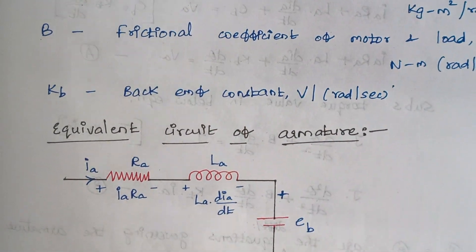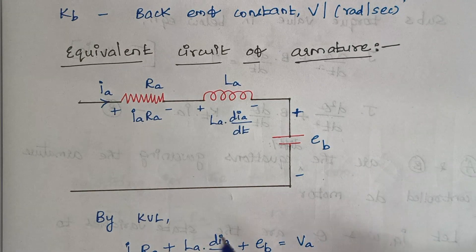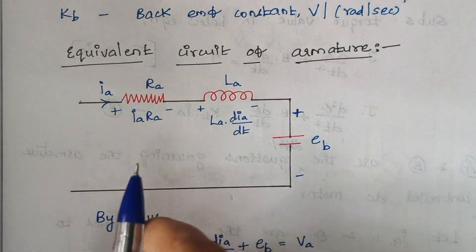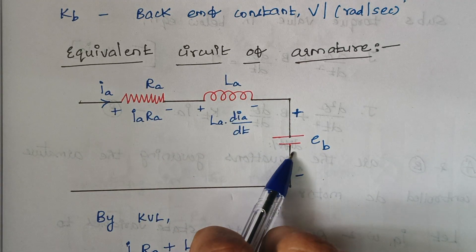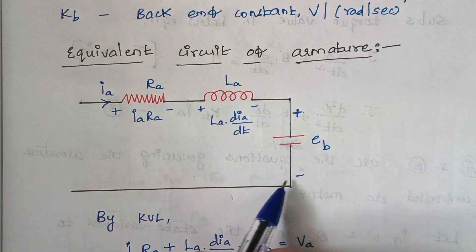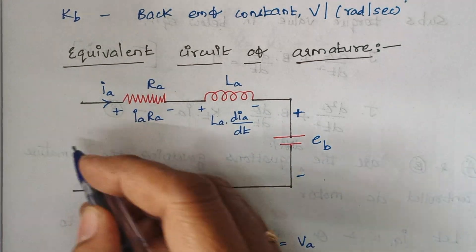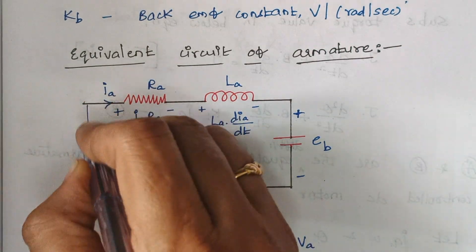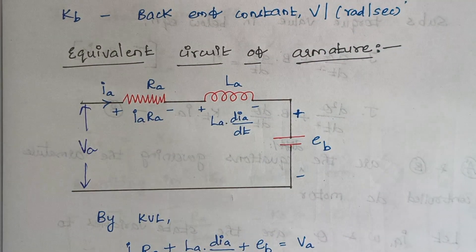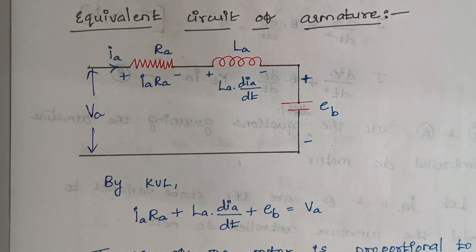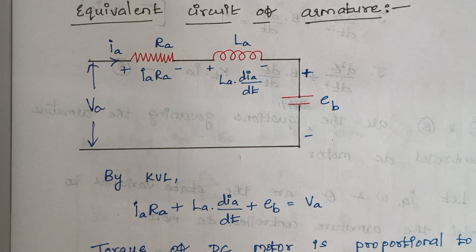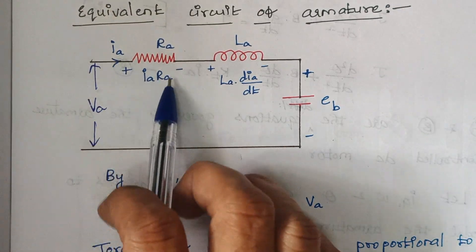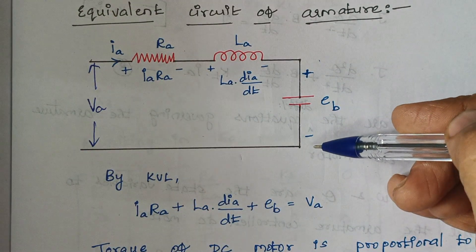Next we proceed with the equivalent circuit of the armature. This is the detailed circuit of an armature — it consists of a resistor, inductor, and a back EMF. The current flowing through this path is IA, and the voltage source here is the armature voltage VA. When you apply KVL — voltage rise equals voltage drop in a closed circuit — the current flows through the resistor, inductor, and back EMF.